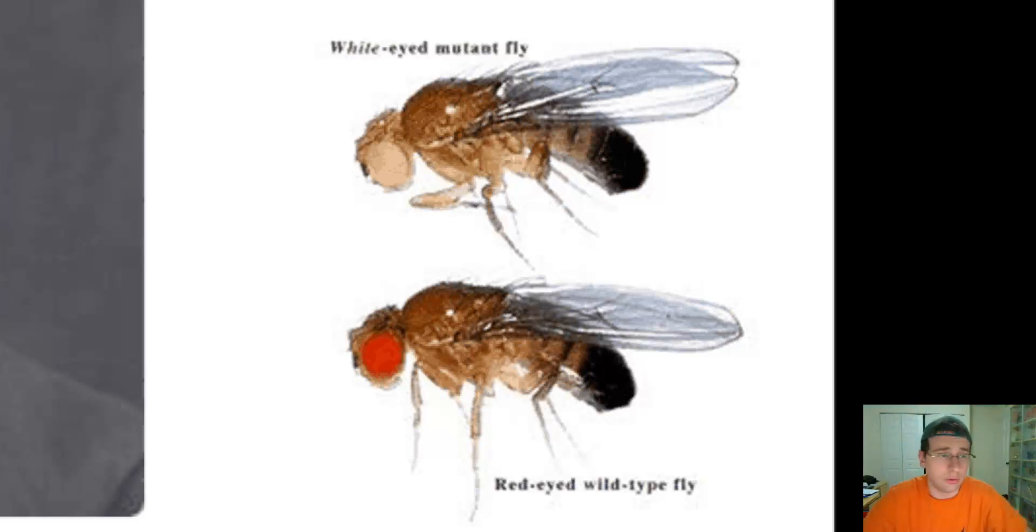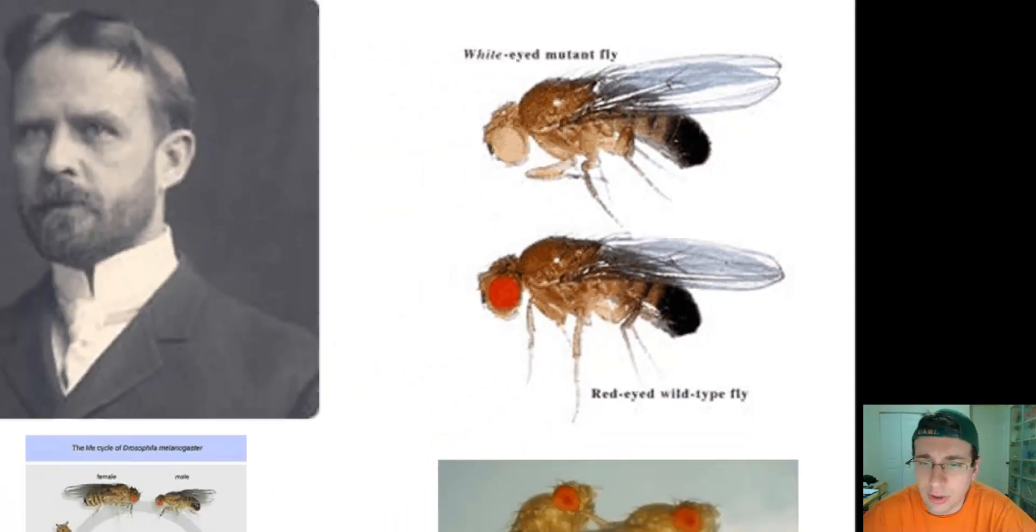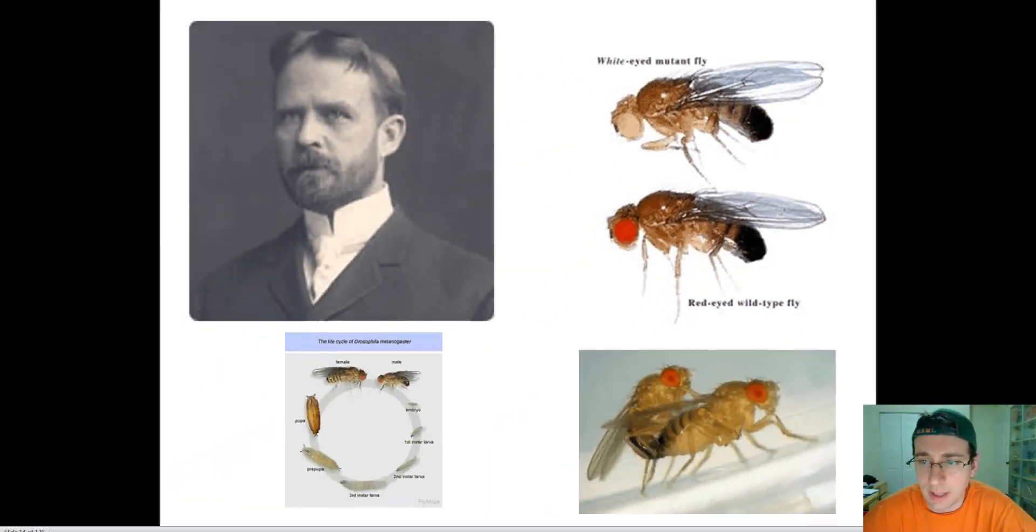By the way, Thomas Hunt Morgan also looked at peas to try to explain the chromosomes that Mendel was actually looking at in his pea studies. And we'll talk about that when we talk about linked genes on the next video.